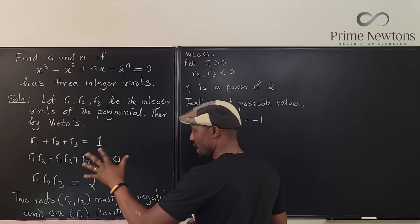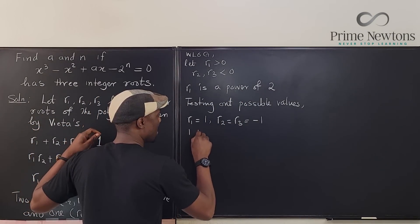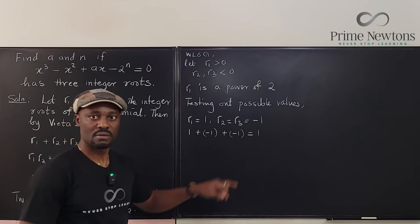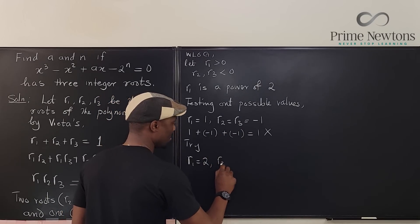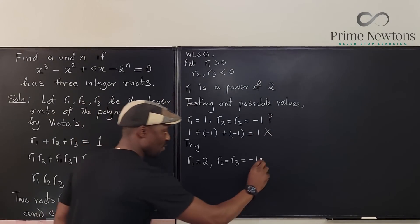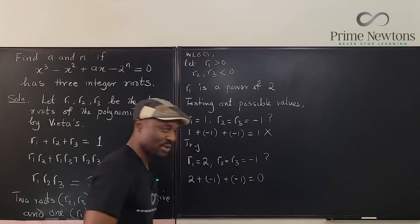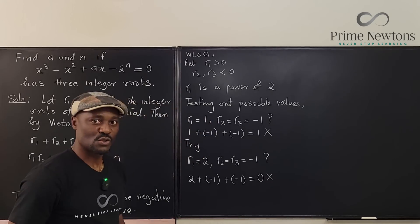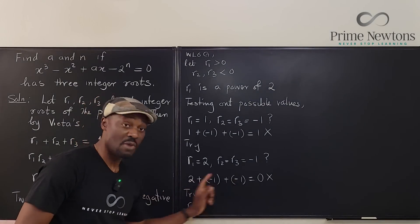Try r1 = 2, r2 = r3 = -1. The sum: 2 + (-1) + (-1) = 0, which still does not equal 1. Getting closer — we've increased the gap — but it still doesn't work. So try the next power of two: r1 = 4, r2 = r3 = -1. The sum: 4 + (-1) + (-1) = 2, which is too big; we're supposed to get 1.